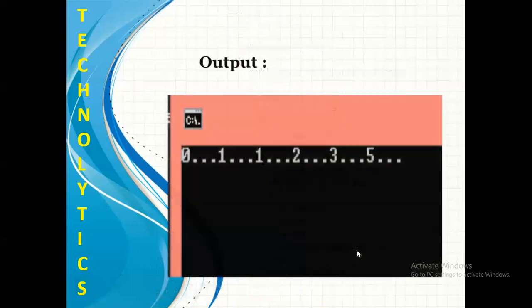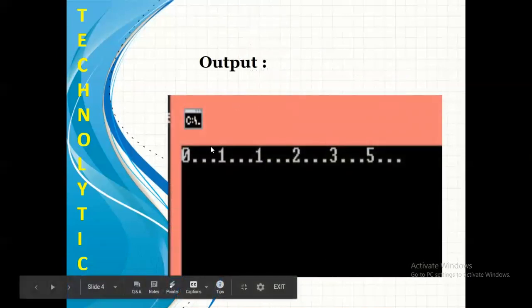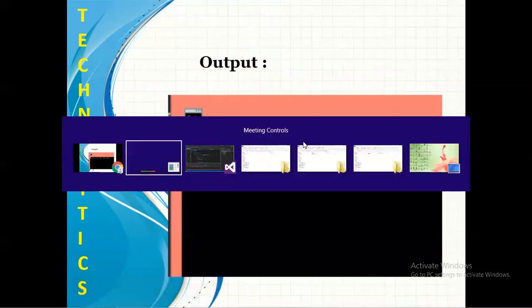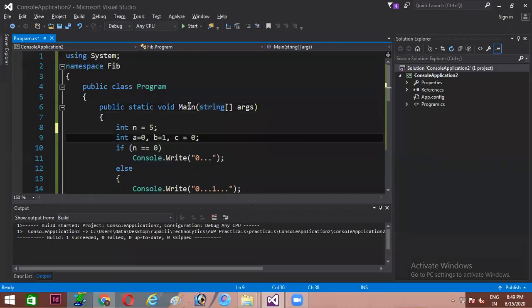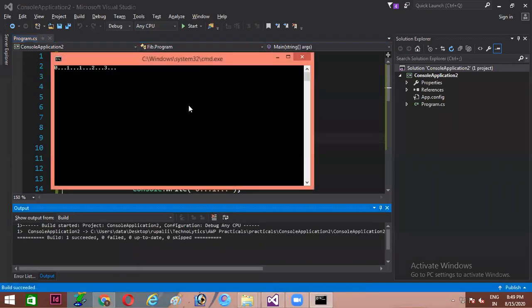Let's see the output of it. You are supposed to get the output like this. Let's check it in Visual Studio 2015. I have already copied that program over here and now I am using the key combination of CTRL and F5 to run this program. You can see...